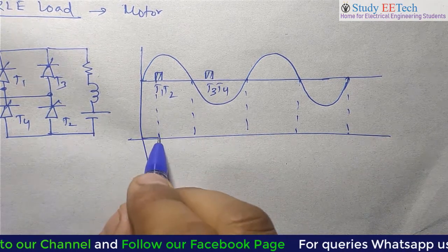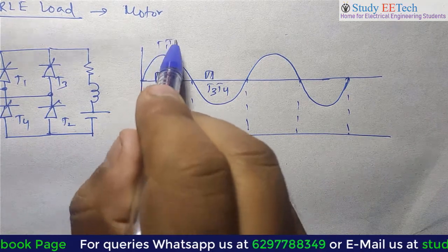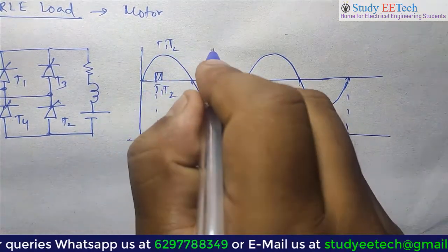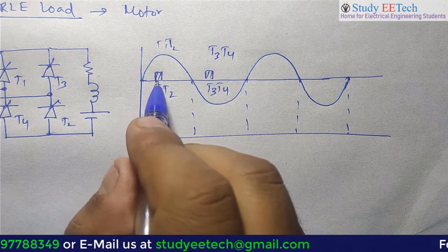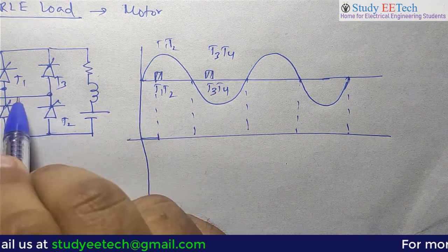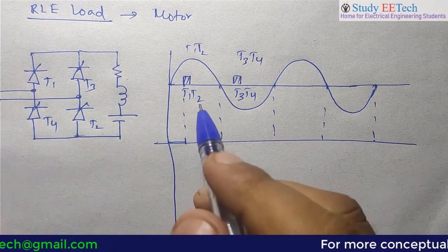At this point we will get zero voltage because T1, T2 is forward biased here, and T3, T4 in the negative half cycle. But before the alpha point is reached, T1, T2 is not triggered. So basically four switches are off. So we will get zero voltage at the load side.